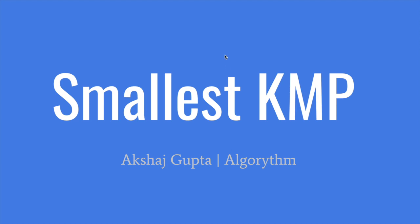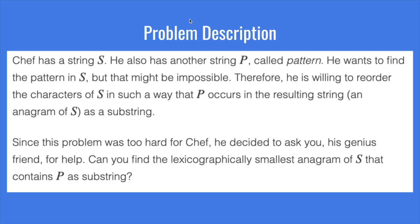Hello, Taylor B. going over the 2020 August Code Chef long challenge problem number four, smallest can P. The problem description is basically Chef has two strings, string S and string P, where string P basically contains a set of characters that are found within S. You are asked to create a string that is lexicographically the smallest, such that P appears in S, and you can rearrange the letters of S. So now let's go over one of the sample test cases for this problem.